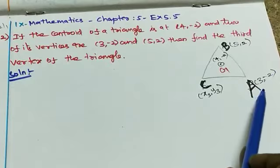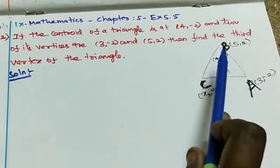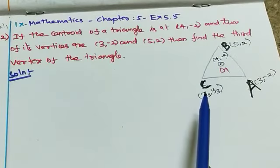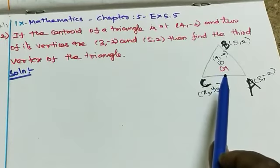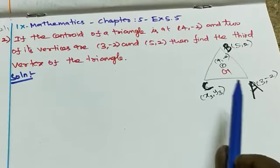First point is (3, -2), this is point A. Second point is B. The third point we need to find. The clue is the centroid is given, so we'll use the centroid formula to solve this.